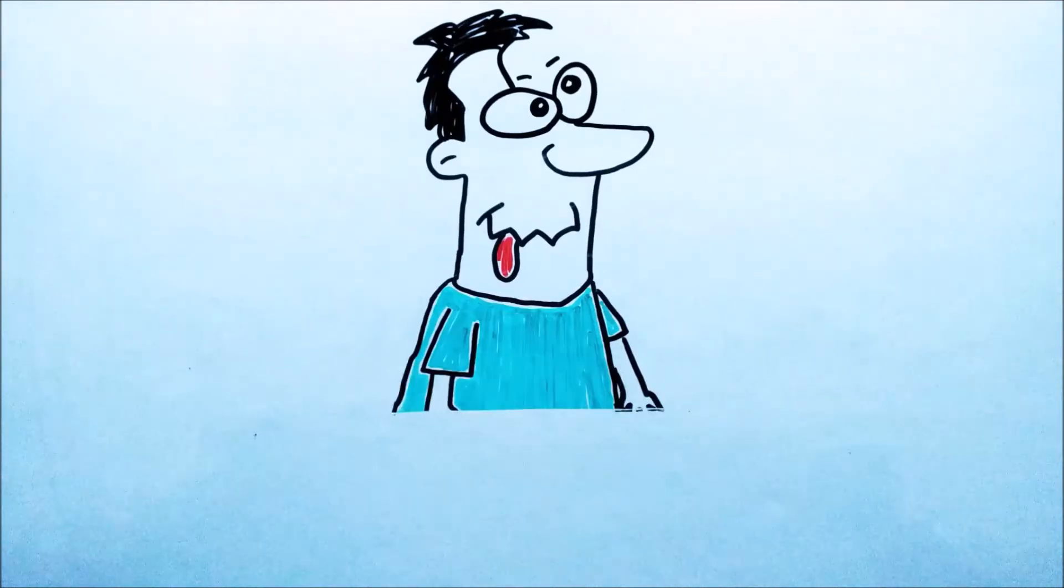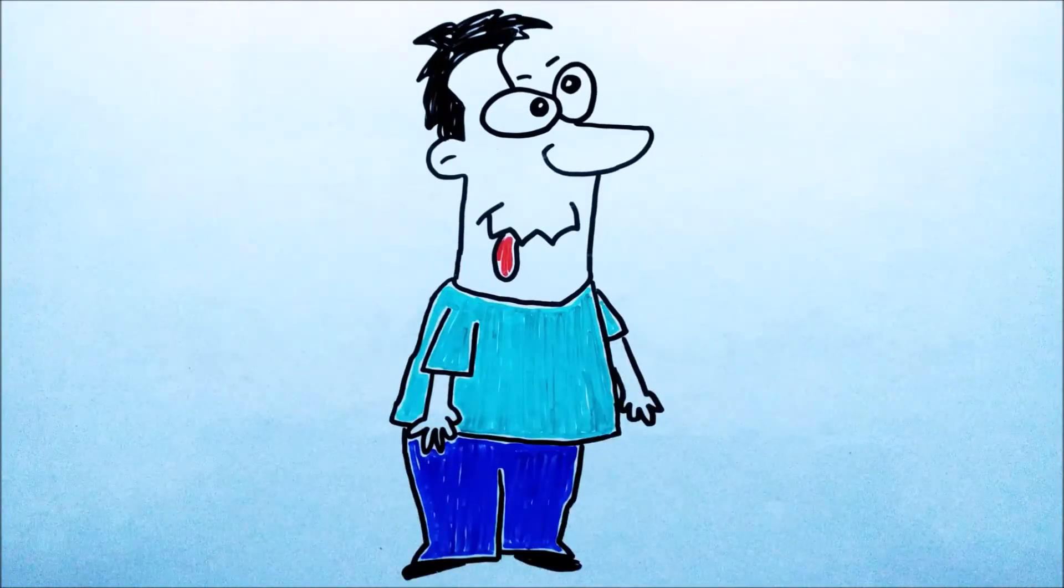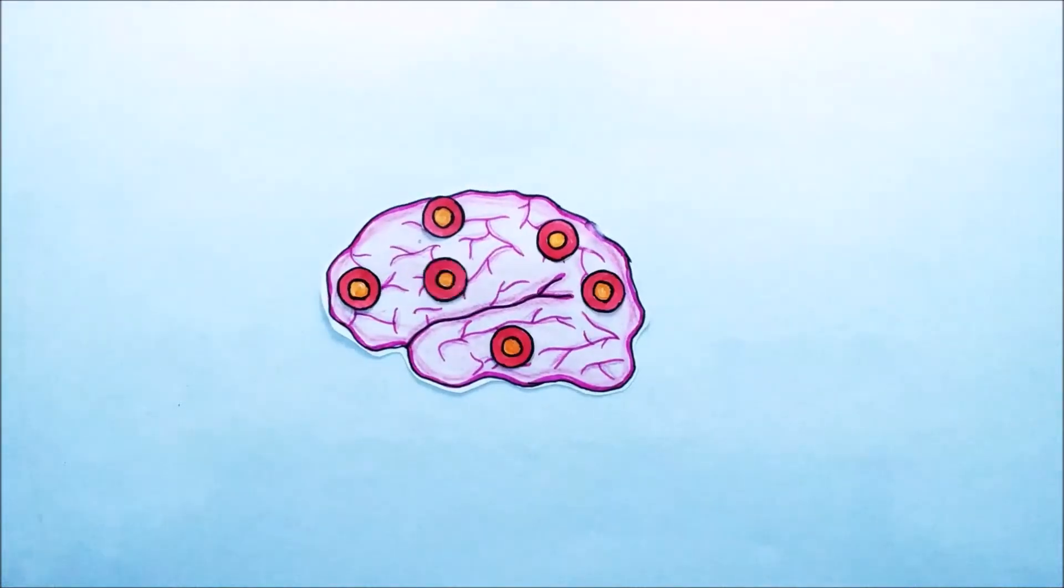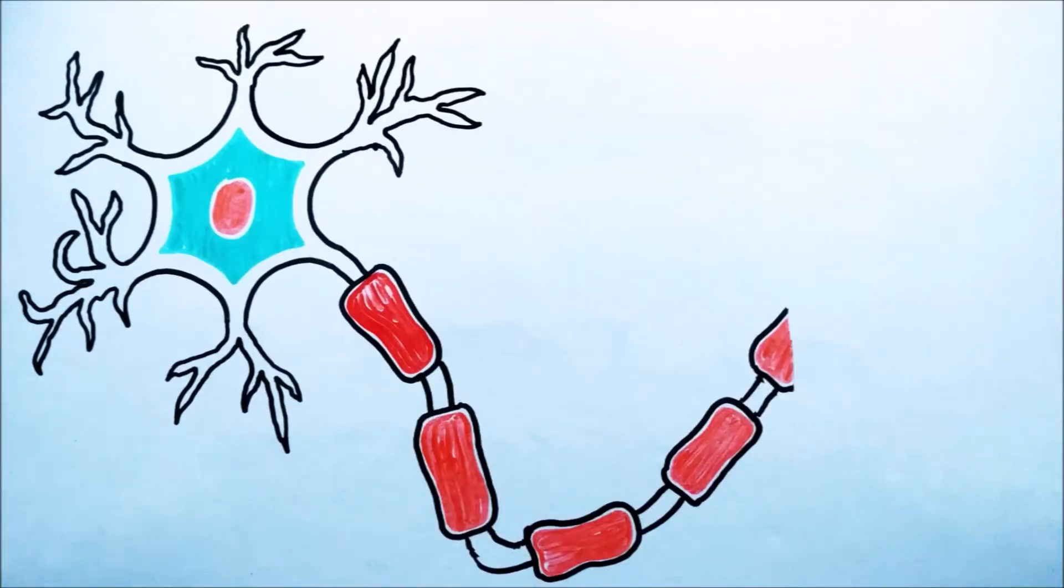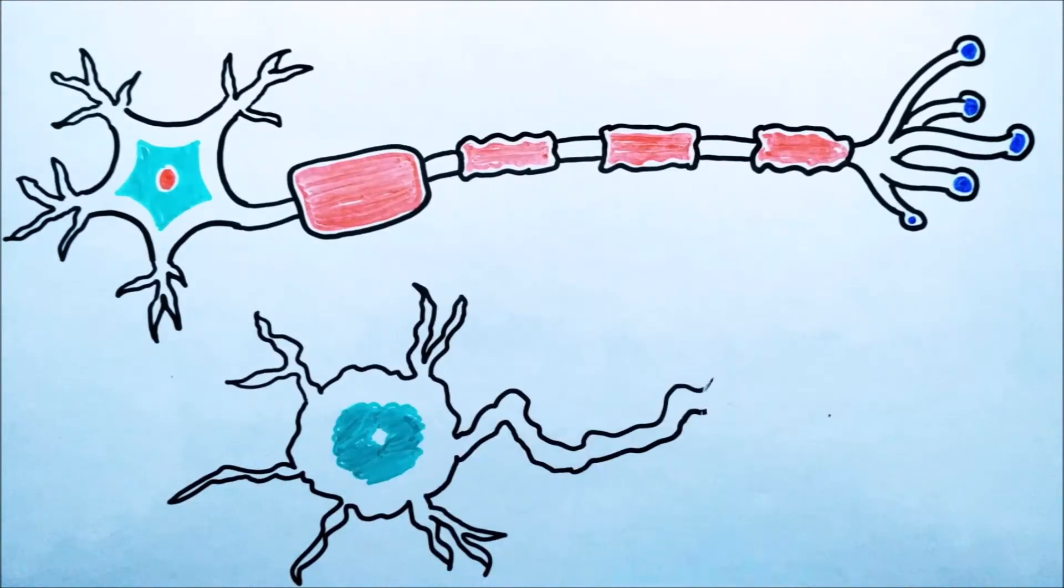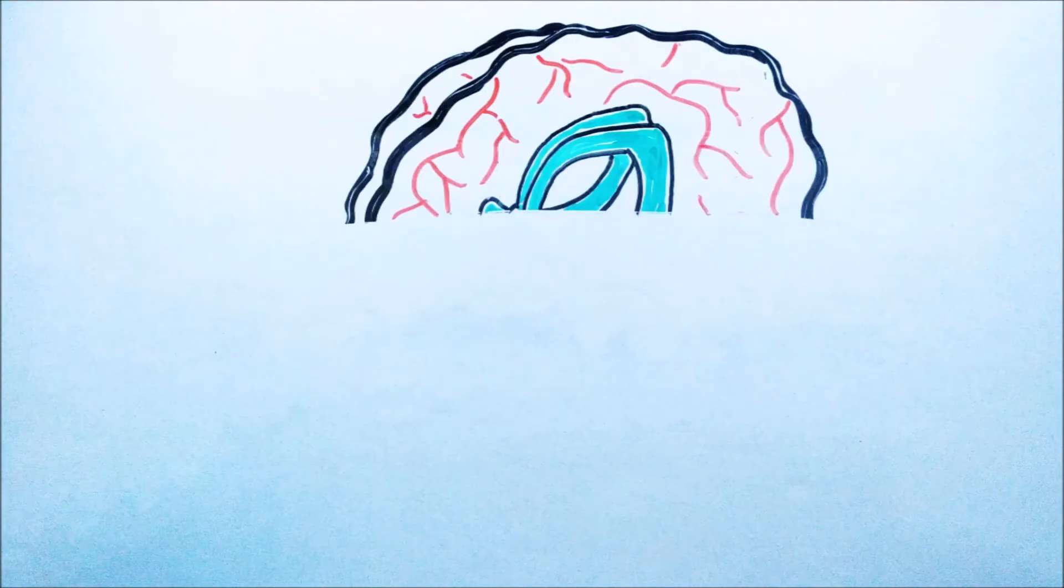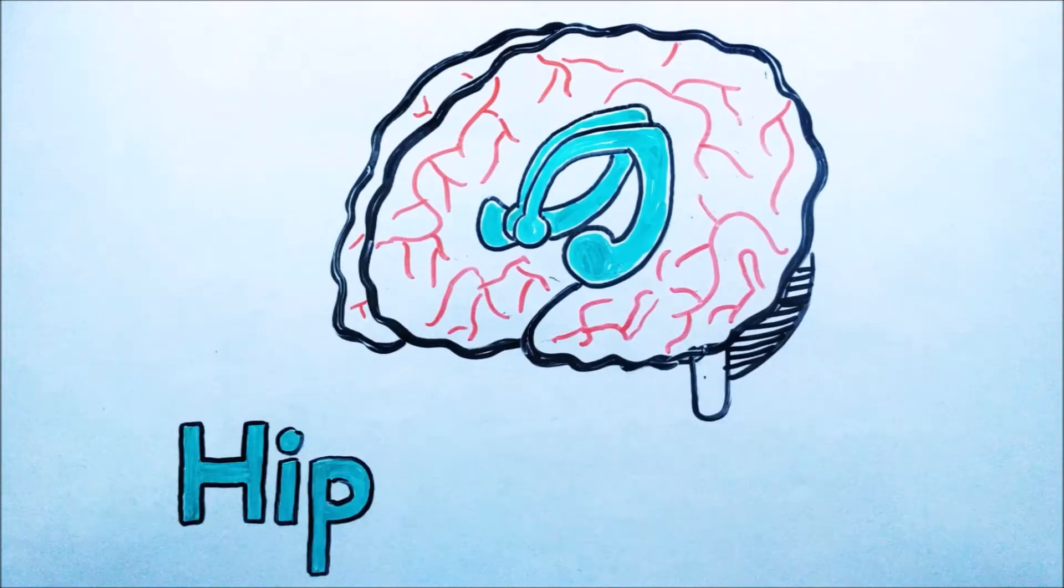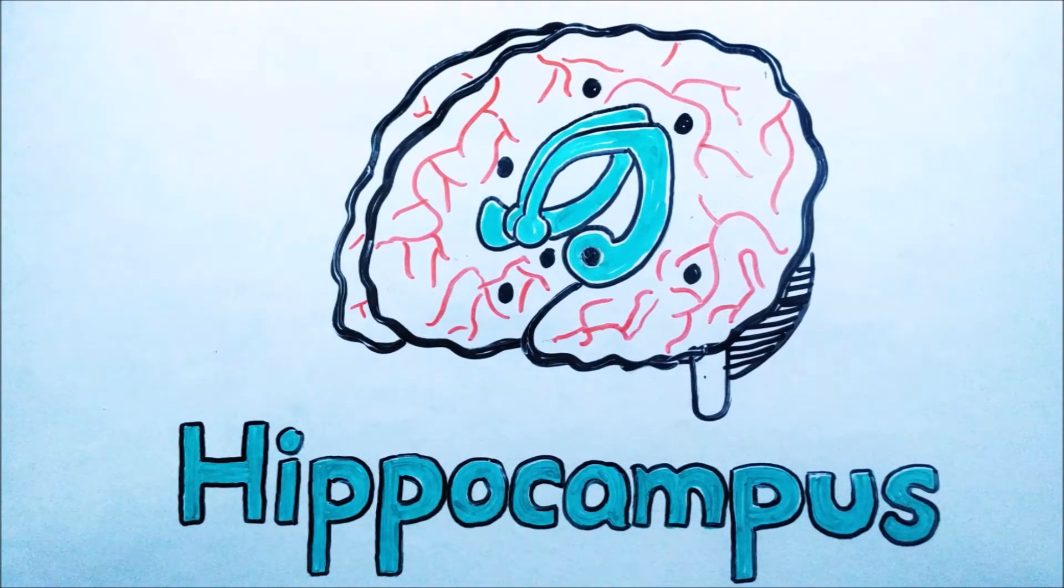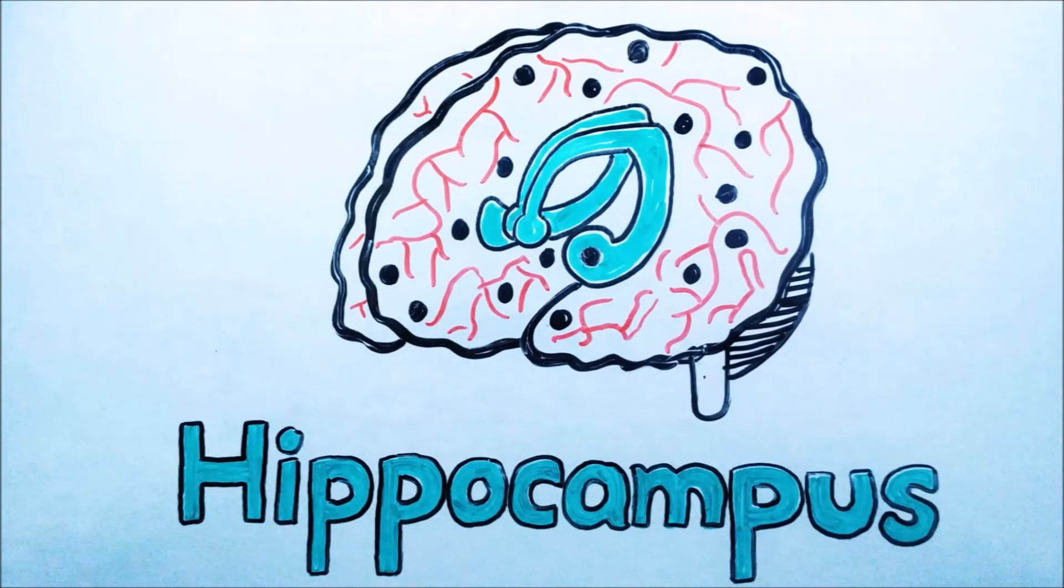Alzheimer is a disease that slowly destroys memory and other mental functions. In this condition, some proteins start to deposit throughout the brain. Because of this, the connection between neurons weakens which may lead to non-function and death of neurons. This damage starts from the part of brain which forms and stores the memory, the hippocampus, and slowly the whole brain is affected by it.